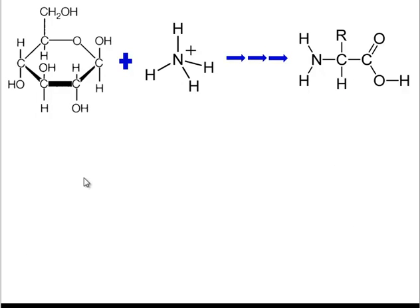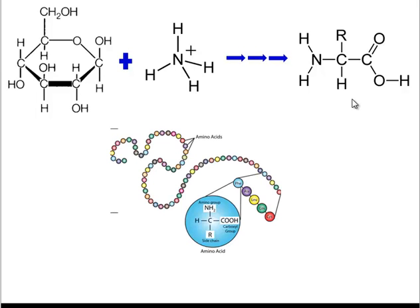However, the plant might also take some of that glucose and add it to some nitrogen that it gets from the soil in order to produce amino acids. And then it can take those amino acids and put them together to produce proteins.